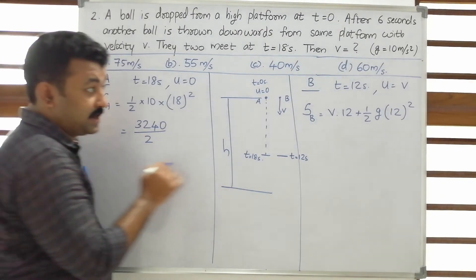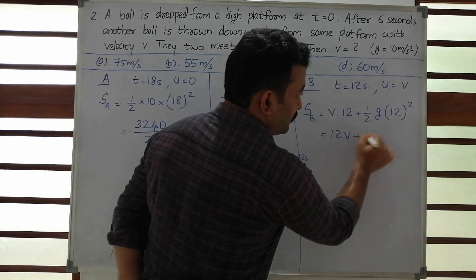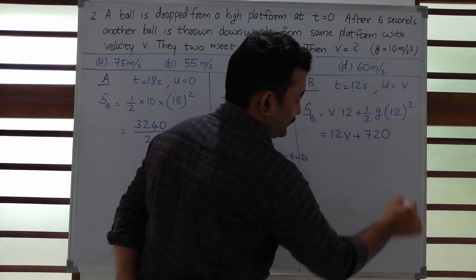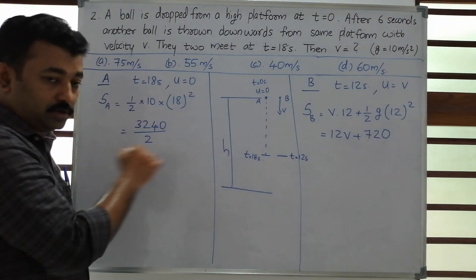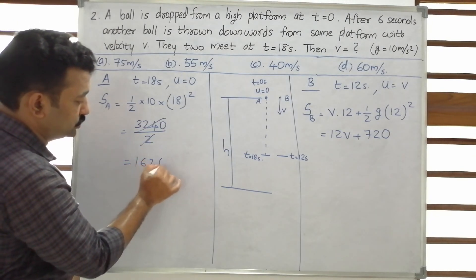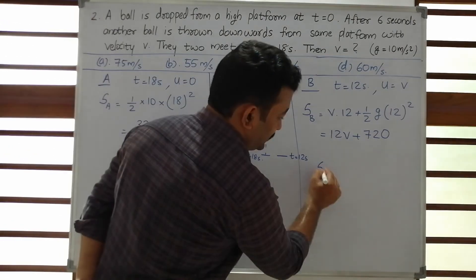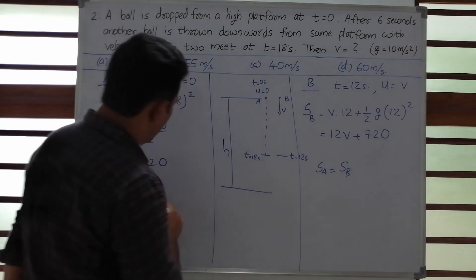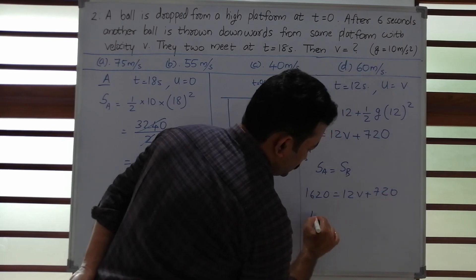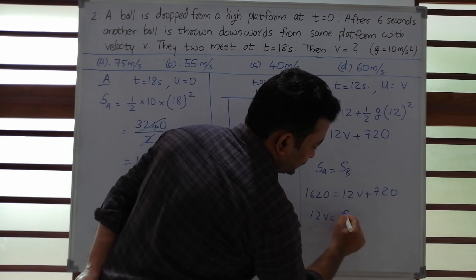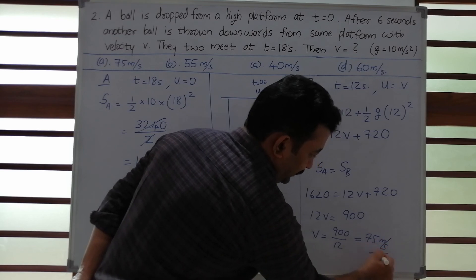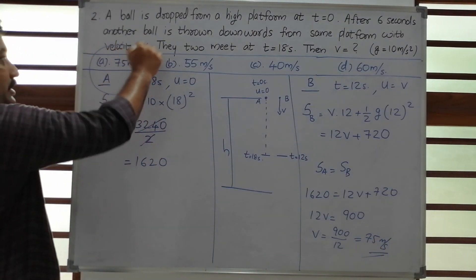Since S_A = S_B: 1620 = 12V + 720. Therefore 12V = 900, and V = 75 meters per second. Option A is the correct answer.